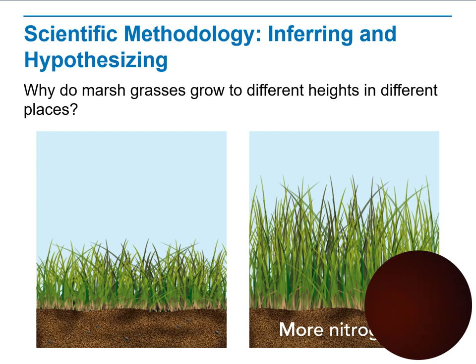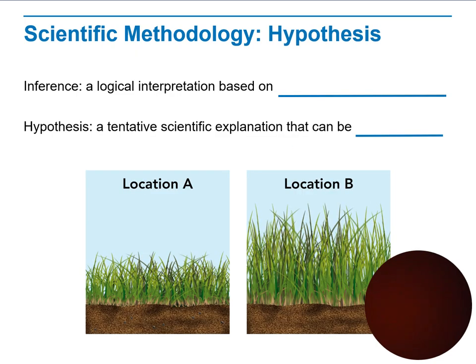Take a look: why do marsh grasses grow to different heights in different places? Maybe in picture A the soil is not rich enough in nutrients, maybe there is not enough sunlight, or maybe the water supply is less — compared to location B, which could have more nutrients like nitrogen in the soil, making it a better place for plant growth. After that, you make a logical interpretation based on what you see and your hypothesis, determining whether your experiment supports or contradicts your hypothesis. You need to consider what scientists already know and what you will test further to confirm if it is right or wrong.